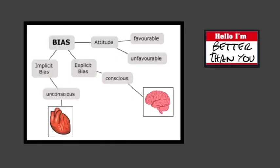Bias is an attitude that projects favourable or unfavourable dispositions towards people. Bias may be conscious, which is explicit, or unconscious, which is implicit, even among well-intended. Implicit bias refers to a positive or negative mental attitude towards a person, thing or group that a person holds at an unconscious level, whilst explicit bias is an attitude that somebody is consciously aware of having.